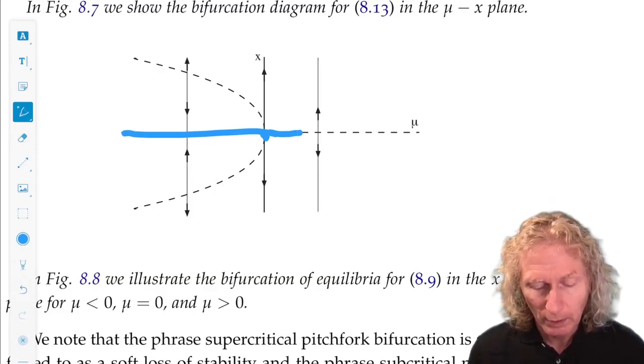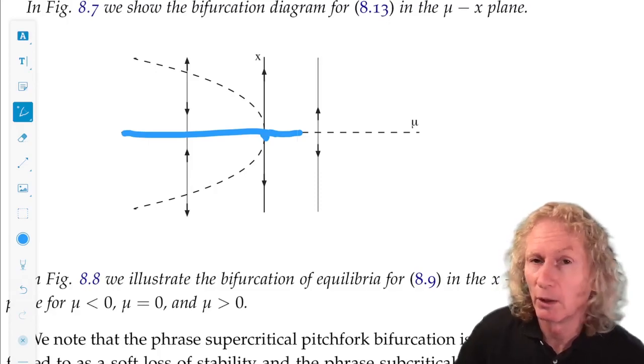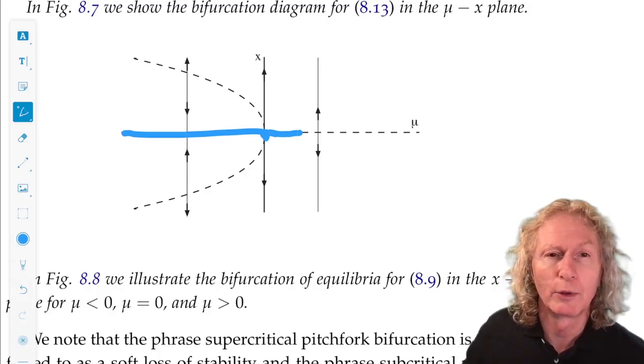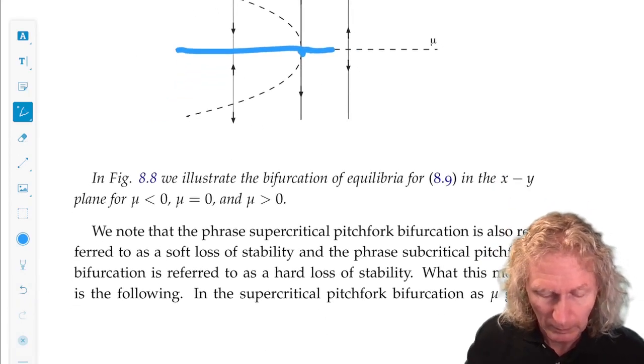The origin is still an equilibrium point. It's unstable and trajectories that aren't on that equilibrium point run off to infinity.